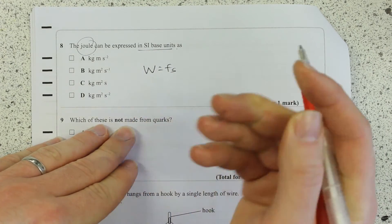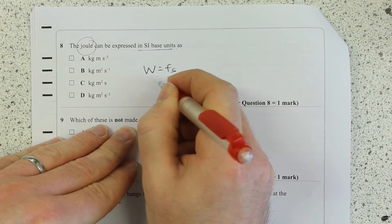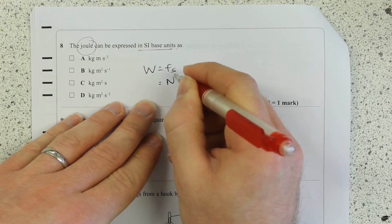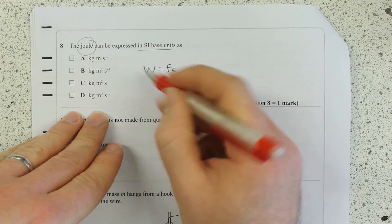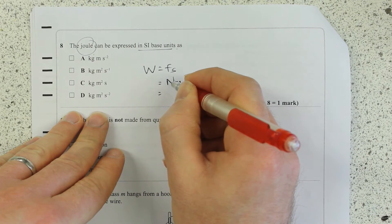It's force times displacement - displacement because force is a vector as well. And what are the units of force? The Newton. And displacement is a meter. Okay, but we're not in base units yet. What about a Newton as a base unit?